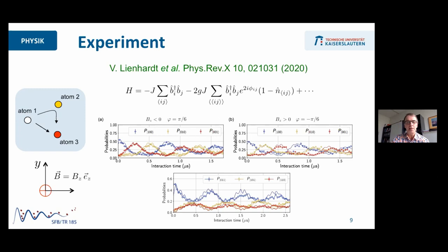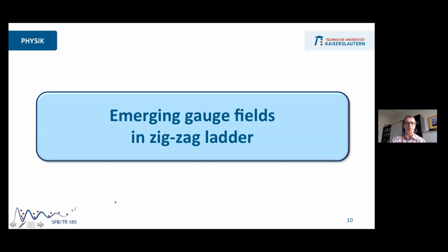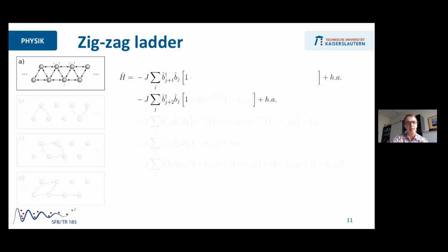Now the question I want to ask is, if we take this simple system and extend it, what sort of interesting many-body physics can be learned from that. The first thing I want to look at is I take a couple of these triangles, put them together to a zigzag ladder, and have a look at the physics happening there. So this is my zigzag ladder.